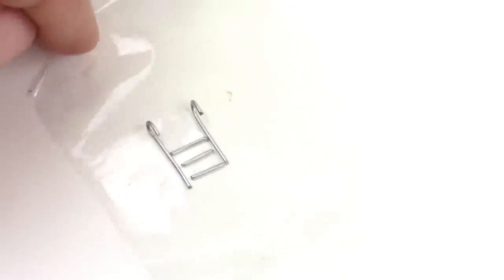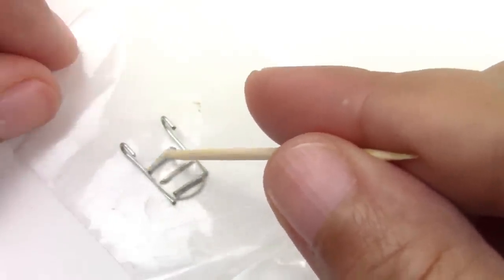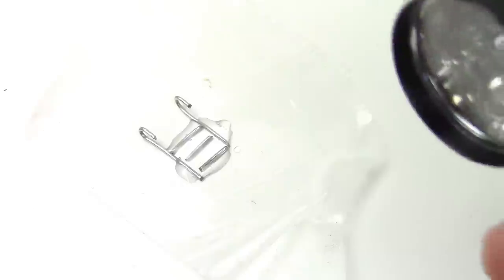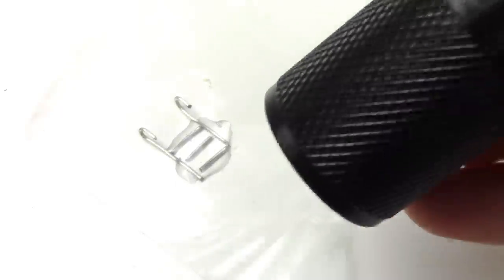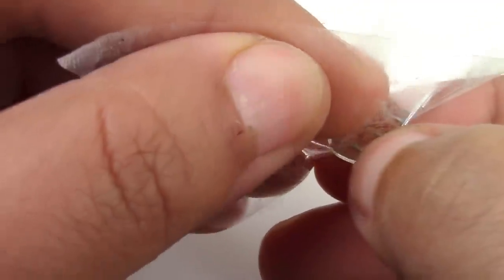And then you're going to take your UV resin and place it right on top. Spread that viscousy goodness all over the place. Once you've spread it, you can leave it in direct sunlight for 30 minutes or flash it with your UV flashlight for about 30 seconds.